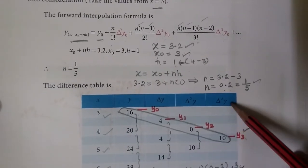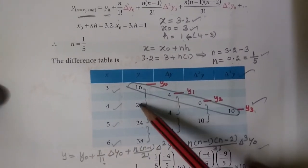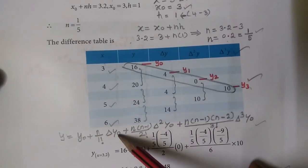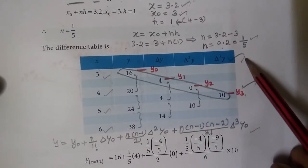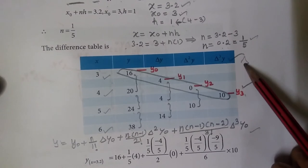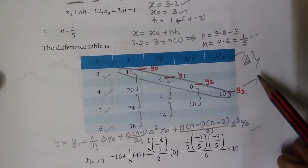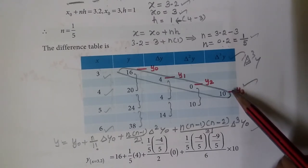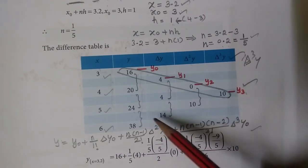This difference table is the final one. How many terms are there? 1, 2, 3, 4 terms. So we have to get these 4 values, then we can get delta cubed y. We are taking up to delta cubed y. Since we have 4 values, we get delta cubed. With 5 values we would get delta to the power 4.